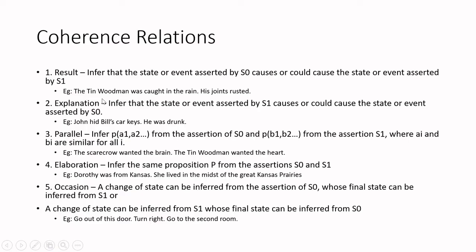Next is explanation — one sentence is an explanation of another. For example: 'John hid Bill's car keys. He was drunk.' Why did John hide Bill's car keys? Because he was drunk. The second sentence is an explanation for the first. Formally, we infer that the state or event asserted by S1 causes the state of S0 — since he was drunk, John hid Bill's car keys.